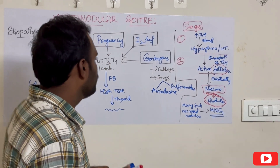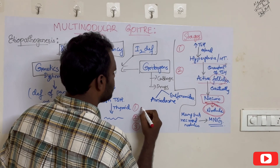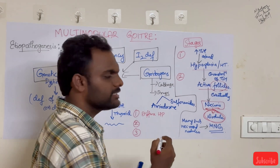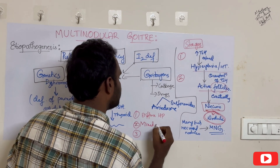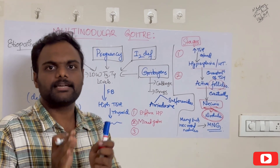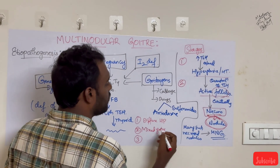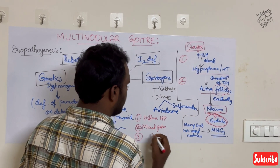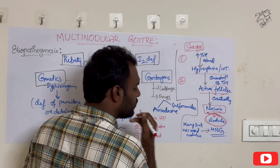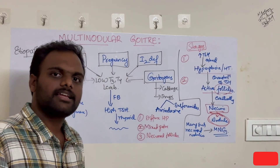These stages are: first, the stage of diffuse hyperplasia; second, the stage of mixed goiter, because there will be some active follicles and some nodules — this can also be called the stage of active follicles; and third, the stage of necrotic follicles, or the nodular phase. So the pathogenesis runs through these three stages.